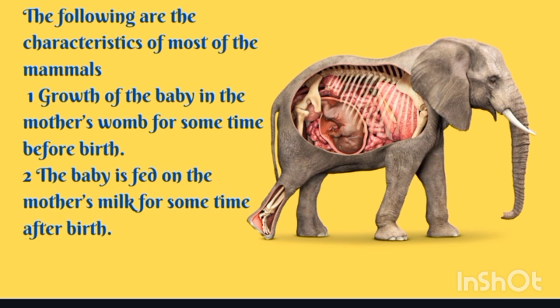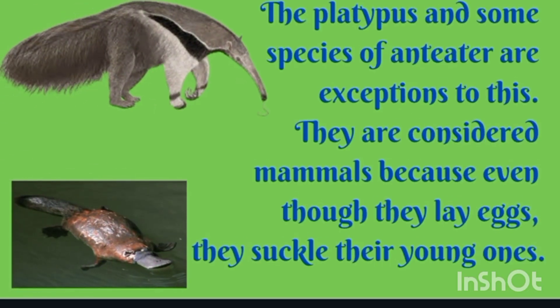The characteristics of most mammals are: first, growth of the baby in the mother's womb before birth; and second, the baby is fed on mother's milk for some time after birth. There is an exception: the platypus and some species of echidna are considered mammals even though they lay eggs, because their young ones suckle — meaning they feed their young ones with milk.